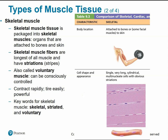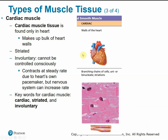Cardiac muscle tissue is found only in the heart, making up the bulk of the heart walls. It's also striated but involuntary — we can't consciously control our heart muscle. If we had to consciously remember to beat our heart, we wouldn't get anything done because we'd die if we forgot. Luckily it runs autonomously; the heart has its own built-in pacemaker allowing a steady rhythmic pace, though the nervous system can influence heart rate — for example, adrenaline in a fight-or-flight situation increases heart rate.